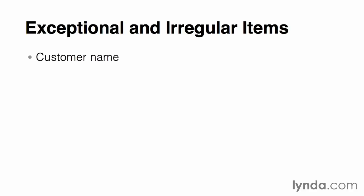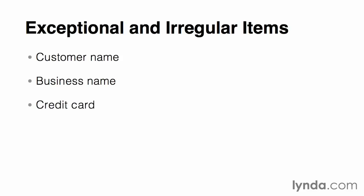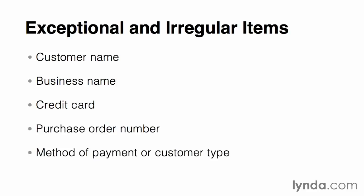This brief explanation indicates several data items that might be exceptions or irregularities. We now know that we need to store a separate customer name and business name items. We also learned that the database should be collecting both a credit card data item and a separate purchase order data item. It might also be useful to store a method of payment or a customer type to keep track of which one is being used for a particular transaction.